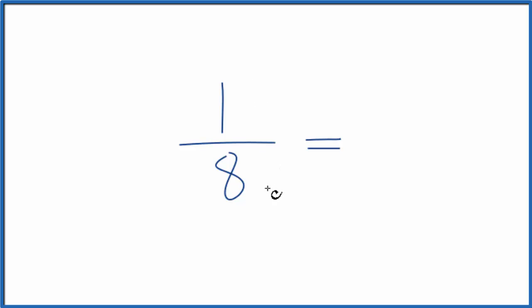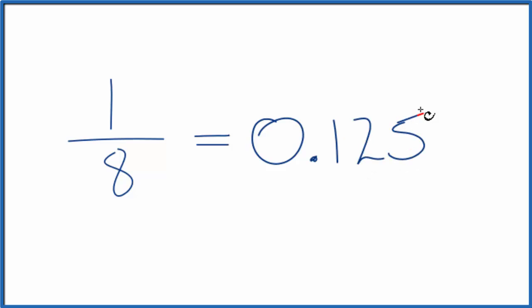First off, if we divided 1 by 8 in our calculator, we'd end up with 0.125. So you could just use a calculator, 1 divided by 8.